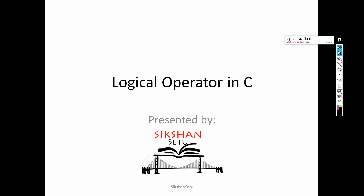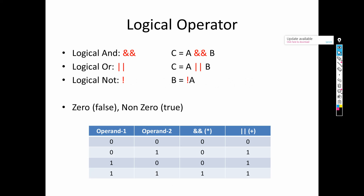Welcome friends. In this video we will be talking about logical operators in C programming. First of all, there are three logical operators: the first is logical AND, the second is logical OR, and the third one is logical NOT.